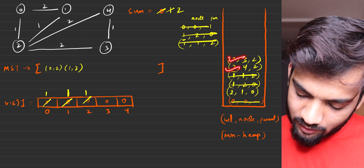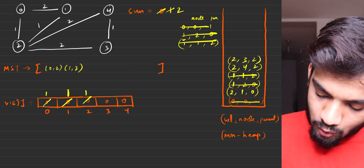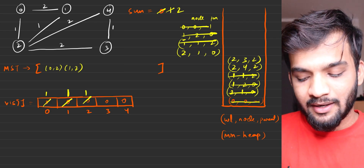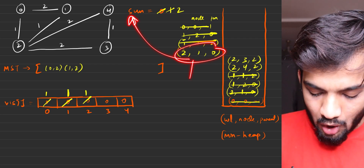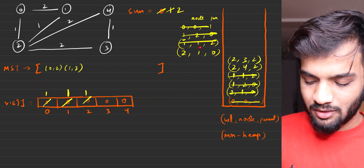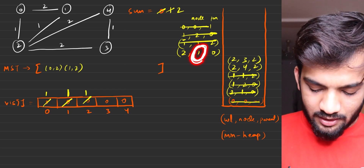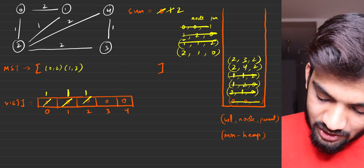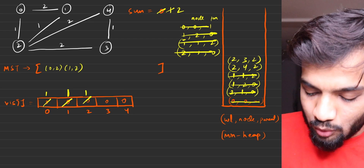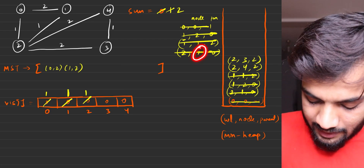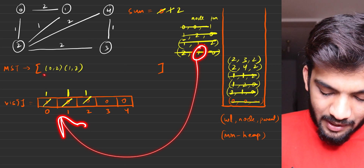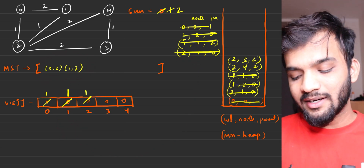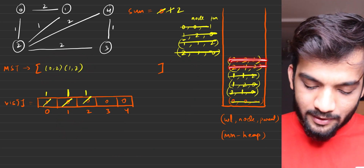Next we pop (2, 1, 0) — edge weight 2, node 1, parent 0. But wait: node 1 is already visited, meaning it's already part of the MST. So we do not add it and do not perform any adjacent operations. If a node is already visited, skip it entirely.